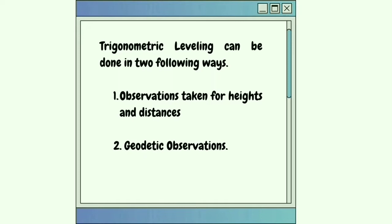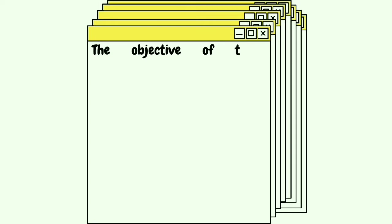Trigonometric leveling can be done in two following ways: 1. Observations taken for heights and distances, and 2. Geodetic observations.